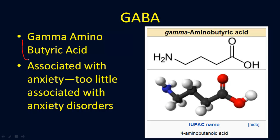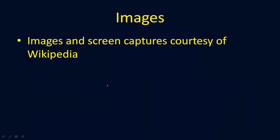GABA, or gamma-aminobutyric acid, is associated with anxiety. Too little GABA in the brain is associated with anxiety disorders, generalized anxiety in particular. It's a good one to have — otherwise, you might be having a less than pleasant experience with life. Thanks to Wikipedia for the images and screen captures. And that's neurotransmitters in a nutshell.